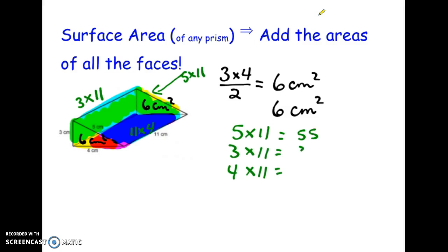So we're going to get 55, 33, and 44. And then we're going to add the sum of all my faces. So when I add the 6, the 6, the 55, the 33, the 44, all together, I should get 144. And because this is surface area and its area, we're going to label it square centimeters.